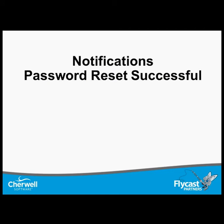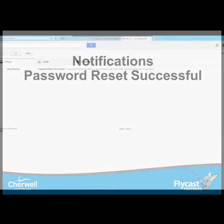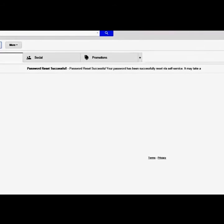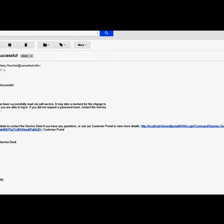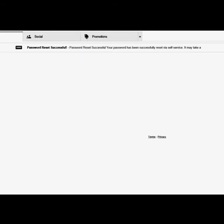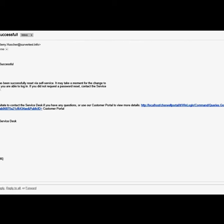Let's take a look at our email to see if our password reset was successful or not. For this video, we're using Gmail as our email provider. Emails are sent to your primary and alternate email address. Let's take a look at our primary email box — we've received an email stating our password reset was successful. We can open the email and read the details. If we look at our alternate email box, we have the same email stating that our password reset was successful.